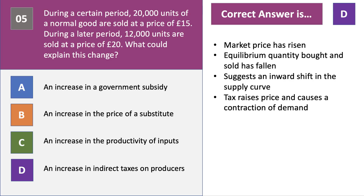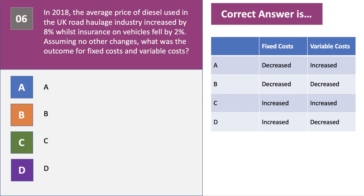We're halfway through. Here are five firm and market structure questions — the second half of the quiz. In 2018 the average price of diesel used in the road haulage industry increased by 8% whilst insurance on vehicles fell by 2%. Assuming no other changes, what was the outcome for fixed costs and variable costs? Please press the pause button and have a go at question 6.